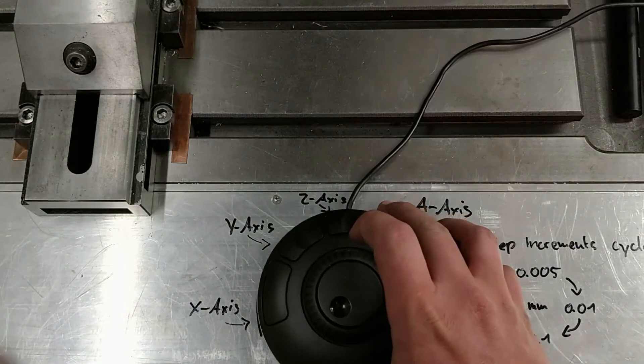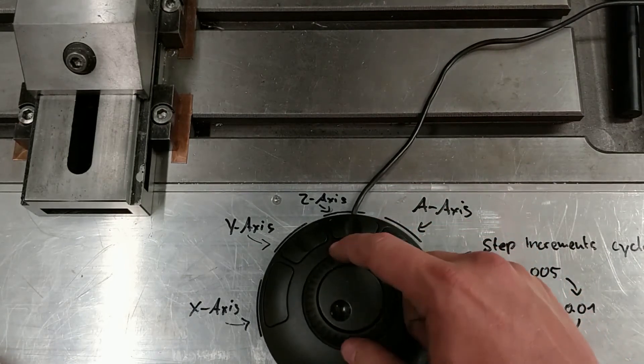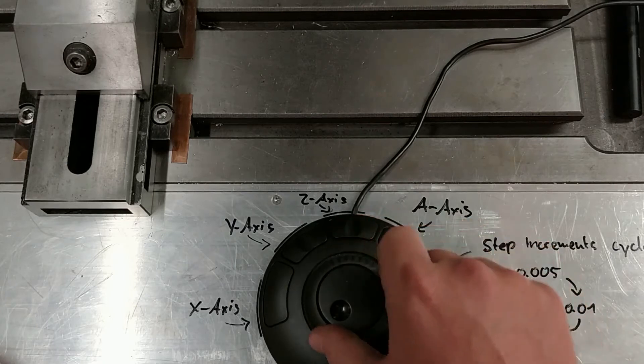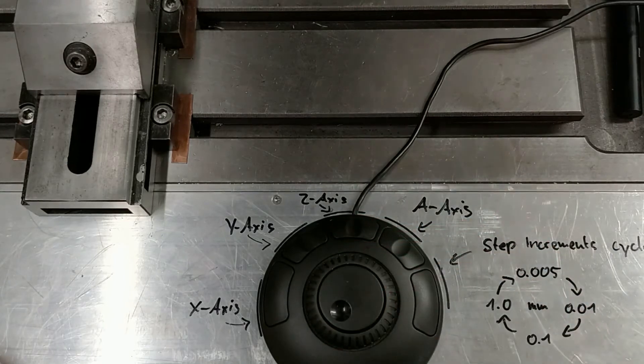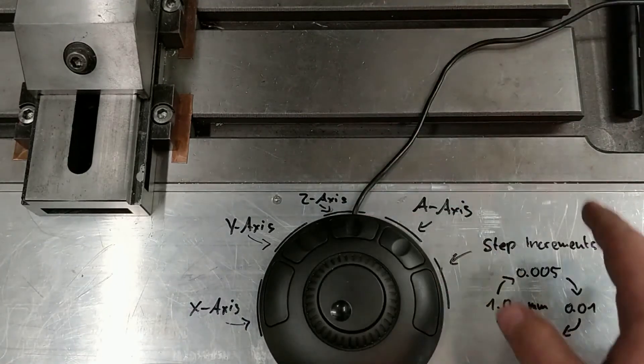And each of these numbers is assigned with a different feed rate. So it depends on how much I turn this outer ring, the axis moves slower or faster.